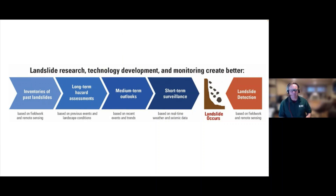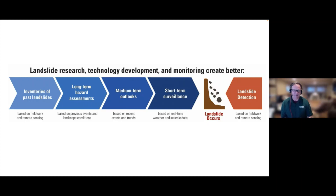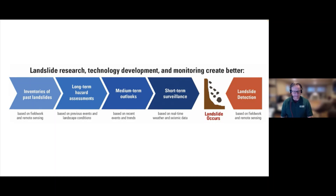For the balance of this talk, I'm going to break things out into this graphic. I'll talk about landslide research, technology development, and monitoring to create better understanding of past landslide activity; how that understanding can be used for long-term and medium-term hazard assessments; how short-term landslide surveillance can provide information primarily to partners at the National Weather Service to provide alerts; and then once a landslide happens and has human impact, an instance where USGS provided technical assistance to emergency managers responding to a tragic landslide disaster.